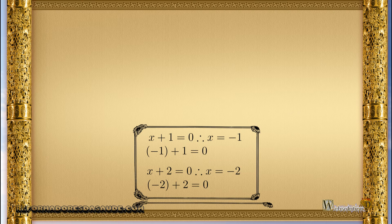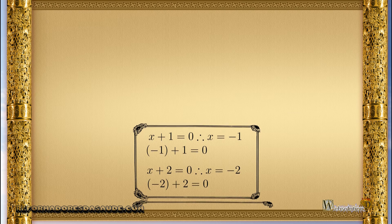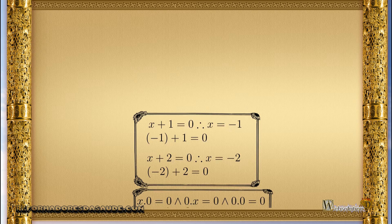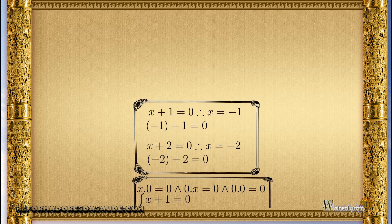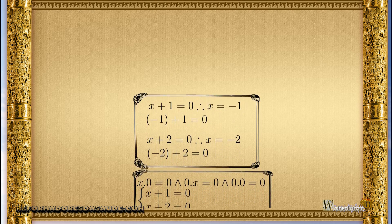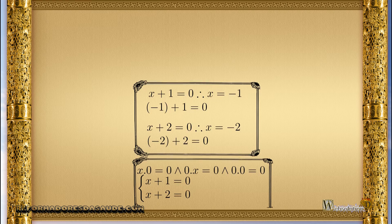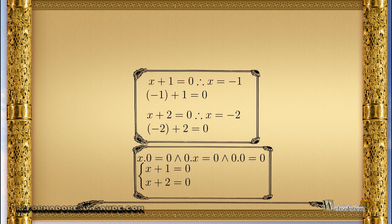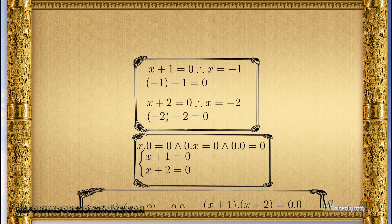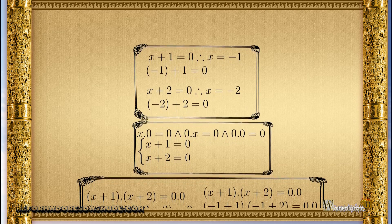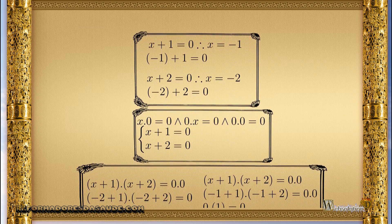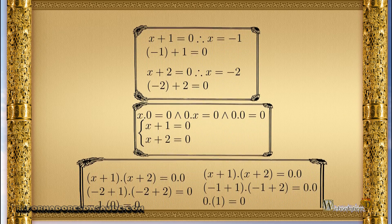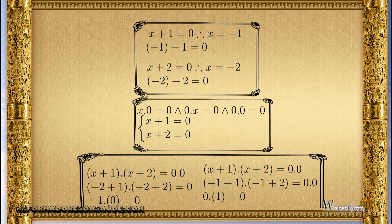For example, x plus 1 equals 0. What is the value of x that makes the equation true? If x has a value of minus 1, then the equation is true, since minus 1 plus 1 equals 0. Any other value makes the equation false.